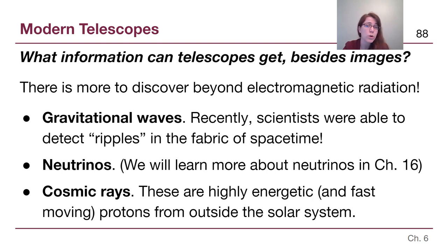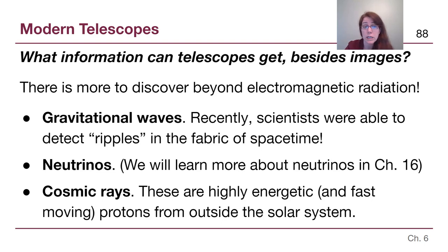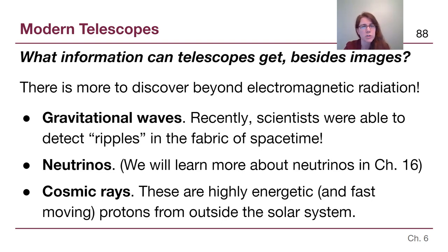Telescopes can also detect things beyond the electromagnetic spectrum. Gravitational waves are ripples in the fabric of spacetime and require a very different telescope structure to detect — you can search LIGO (L-I-G-O) to see what that looks like. Neutrinos, which we'll learn about in Chapter 16, are a particle, not a form of light — they aren't photons. We'll learn what neutrino telescopes actually observe later in the semester.